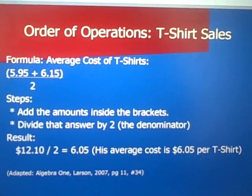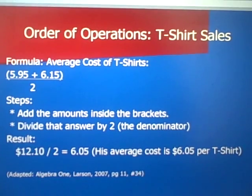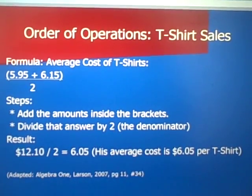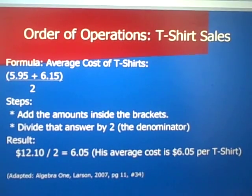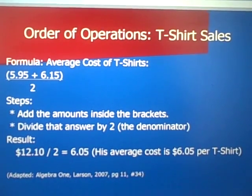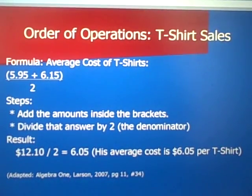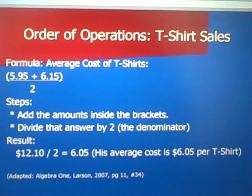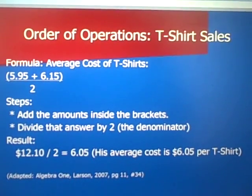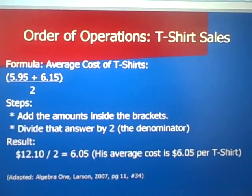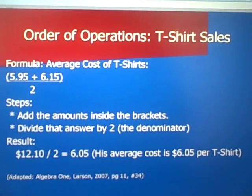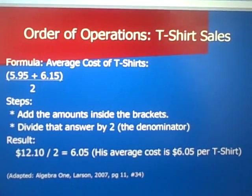Using order of operations, we created a formula: add the prices of the two t-shirts together and divide by two. The result: $5.95 plus $6.15 equals $12.10; divided by two equals an average cost of $6.05 per t-shirt.